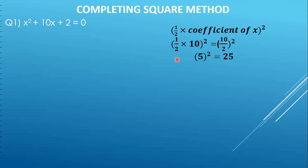Now we have to substitute this value of 25 in the equation, but where do we substitute it? We want the presence of 25 in our equation without changing the meaning of the equation. So what we have to do is add 25 as well as subtract 25. Adding and subtracting 25 gives zero, so you get the presence of 25 while the meaning of the equation remains unchanged.